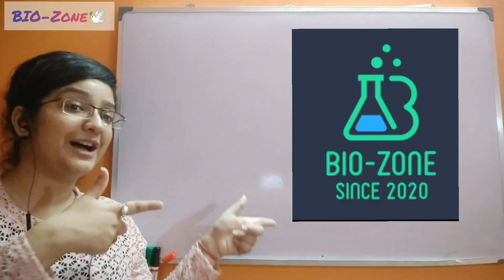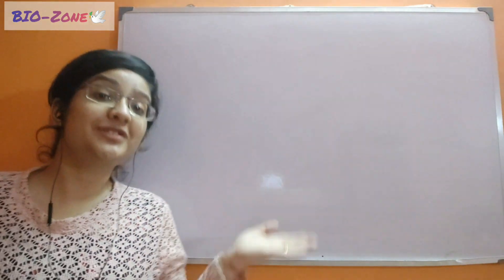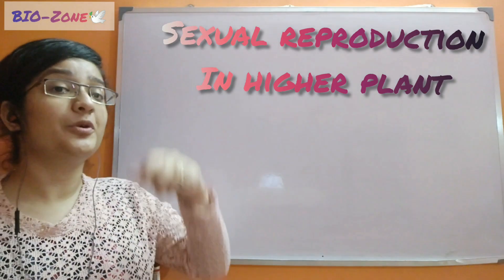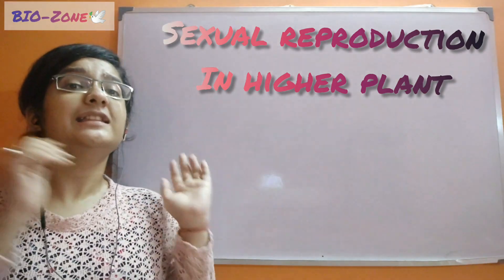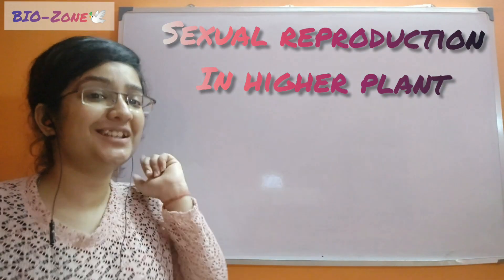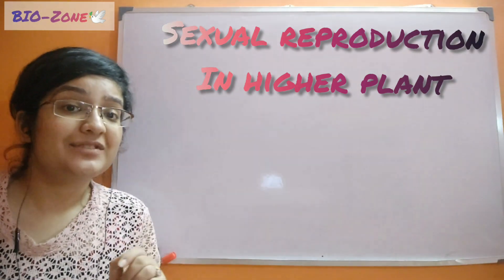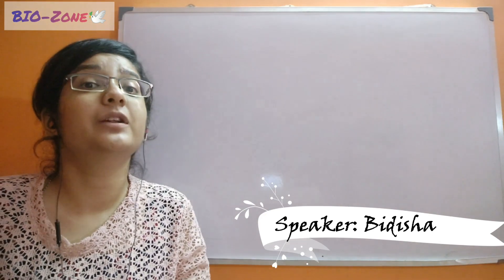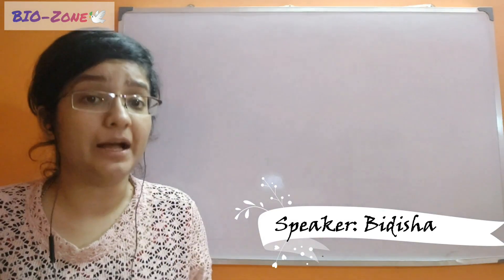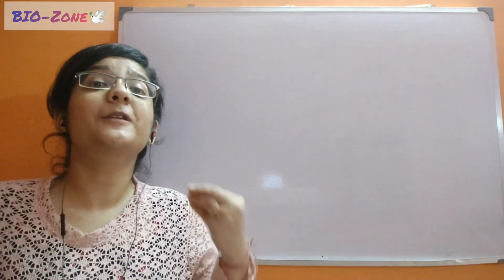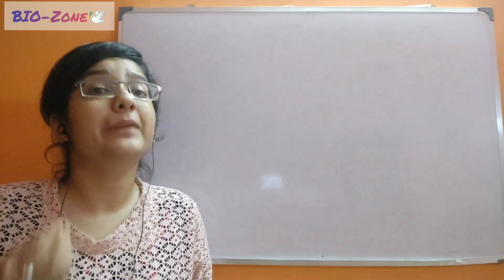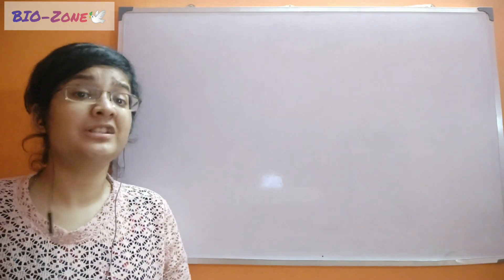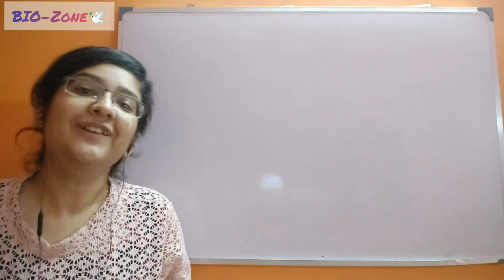Hello friends, welcome back to BioZone. I'm Vinisha Mithishwarya, and today we will discuss a very important topic of class 12 — sexual reproduction in the flowering plants. This topic will come in three successive videos, so stay tuned. Today's class we will discuss about how the main components for sexual reproduction will be developed — that is, the male and the female gamete.